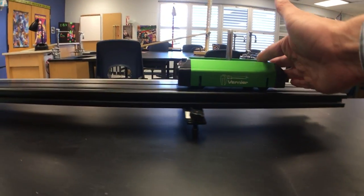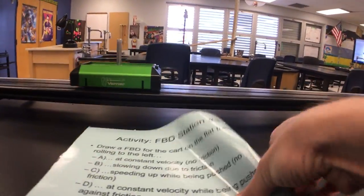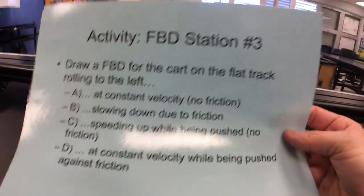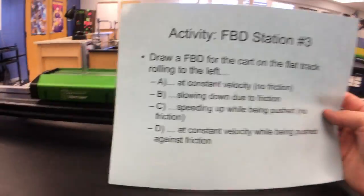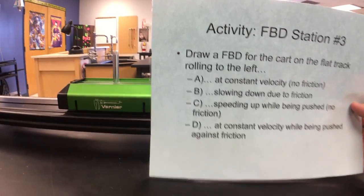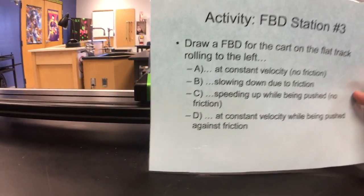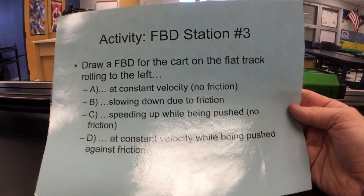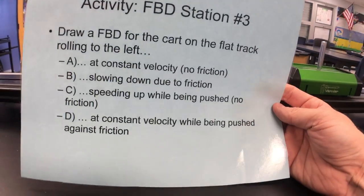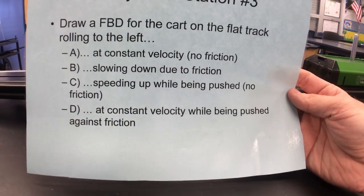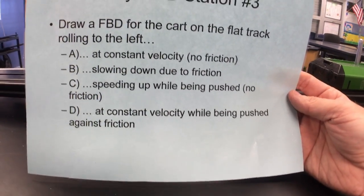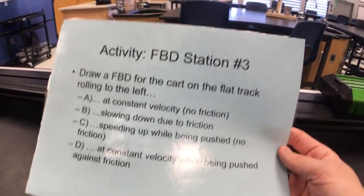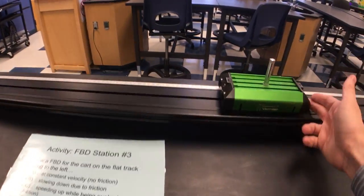We've got a flat track with a cart. Free body diagram, station number three. Draw a free body diagram for the cart on the flat track: A, rolling to the left at constant velocity with no friction; B, slowing down due to friction; C, speeding up while being pushed with no friction; D, at constant velocity while being pushed against friction.